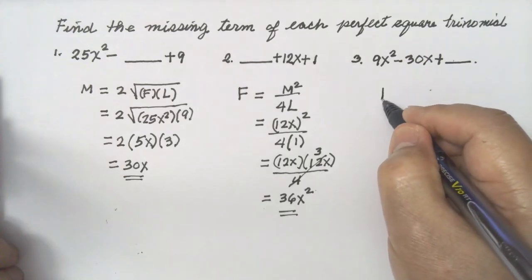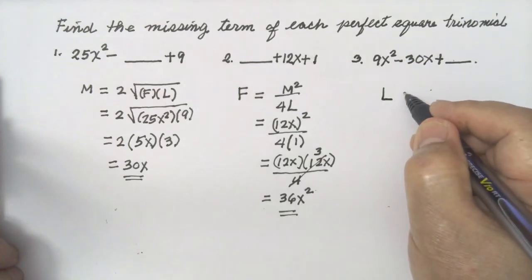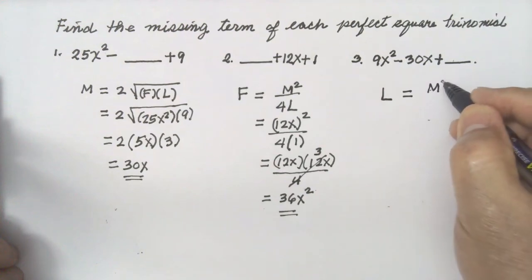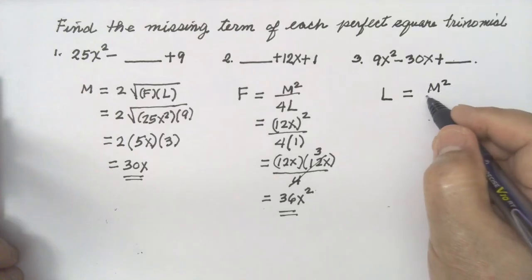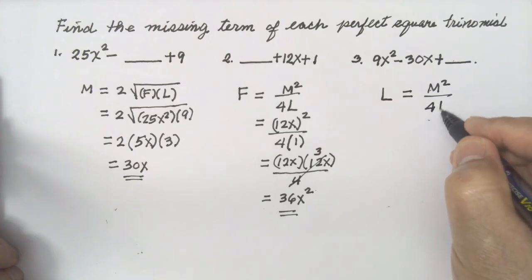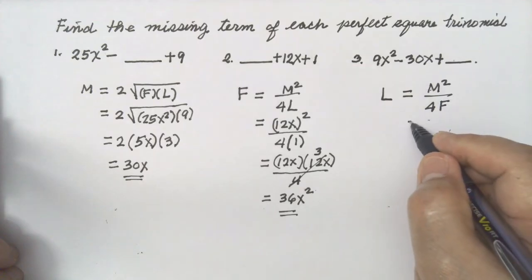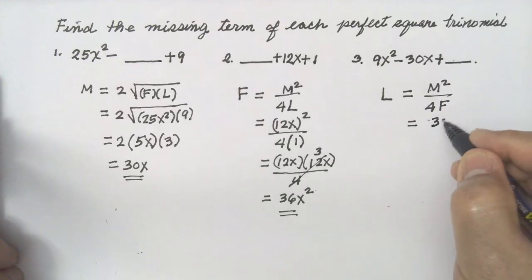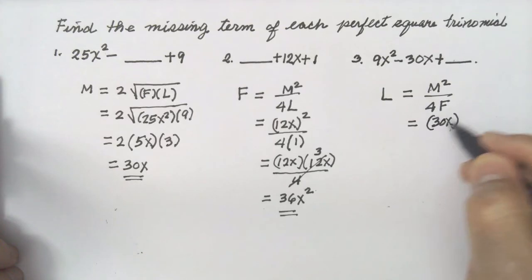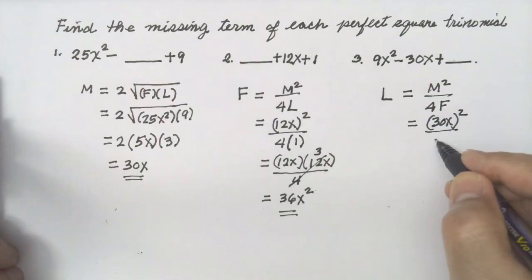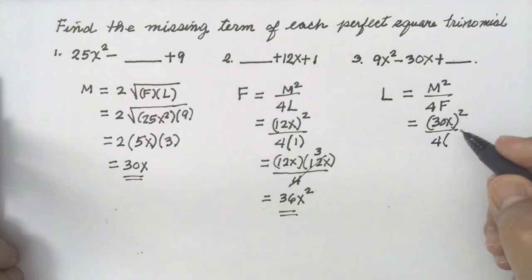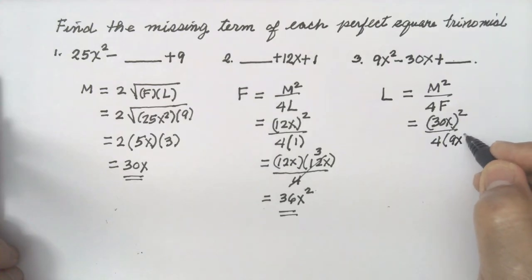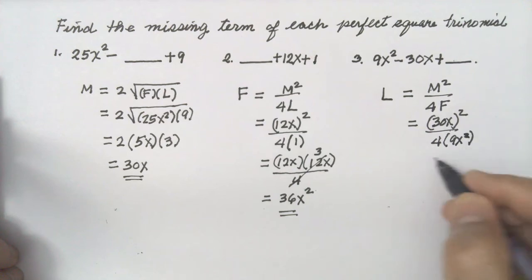Number three: the last term is missing. The formula is: last term equals the square of the middle term over 4 times the first term. Substituting: the middle term is 30x, so write (30x)² over 4 times the first term, which is 9x².